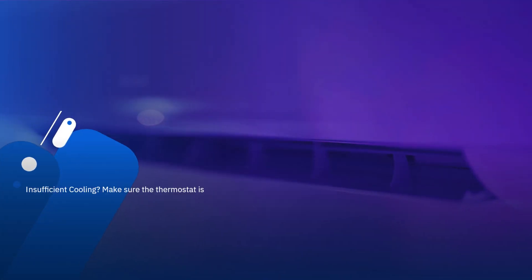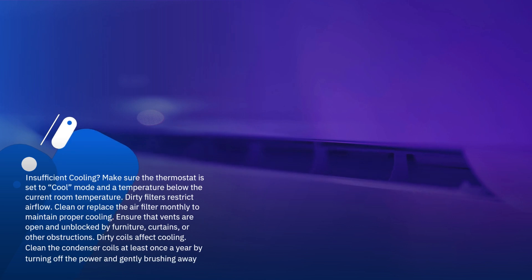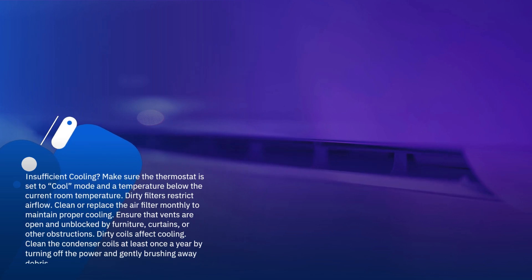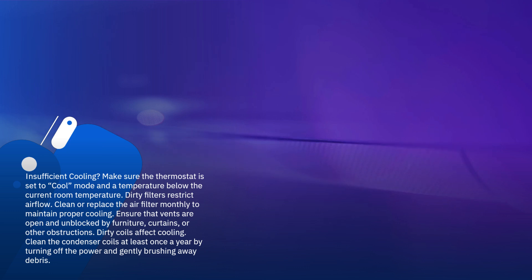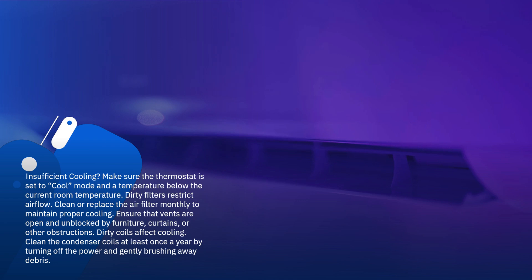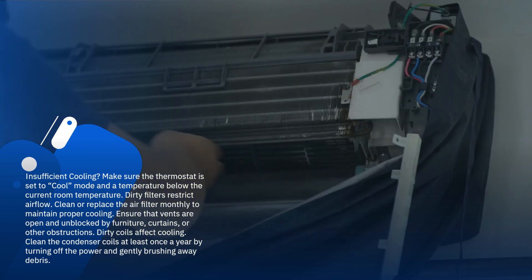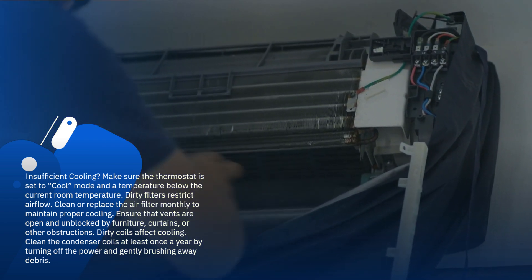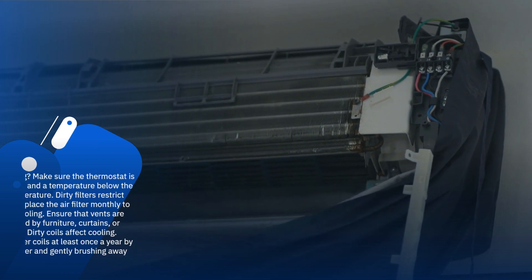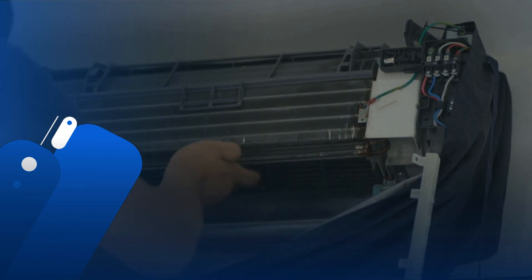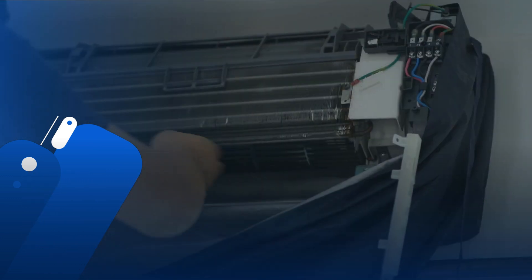Insufficient cooling? Make sure the thermostat is set to cool mode and a temperature below the current room temperature. Dirty filters restrict airflow — clean or replace the air filter monthly to maintain proper cooling. Ensure that vents are open and unblocked by furniture, curtains, or other obstructions. Dirty coils affect cooling; clean the condenser coils at least once a year by turning off the power and gently brushing away debris.